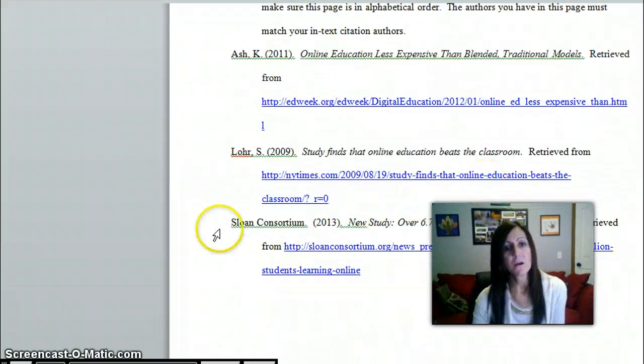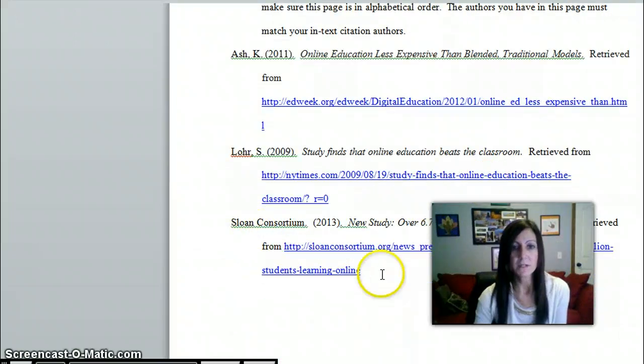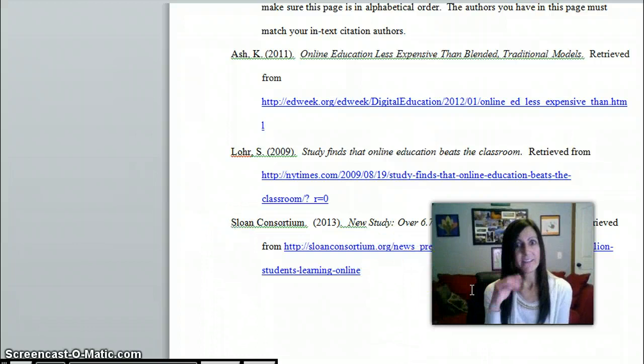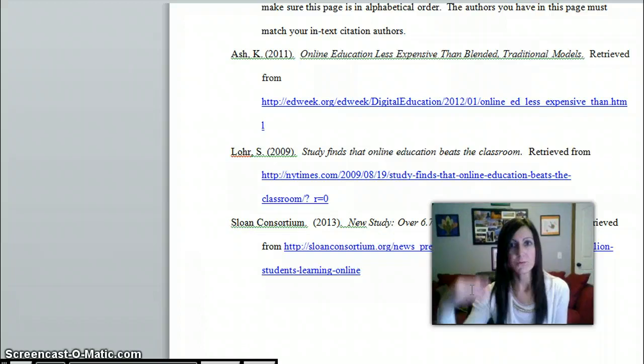That one was by the author of the Sloan Consortium, so when I scroll down to my references section I can see the full bibliographic reference right down here. That's the difference between an in-text citation and a reference citation.